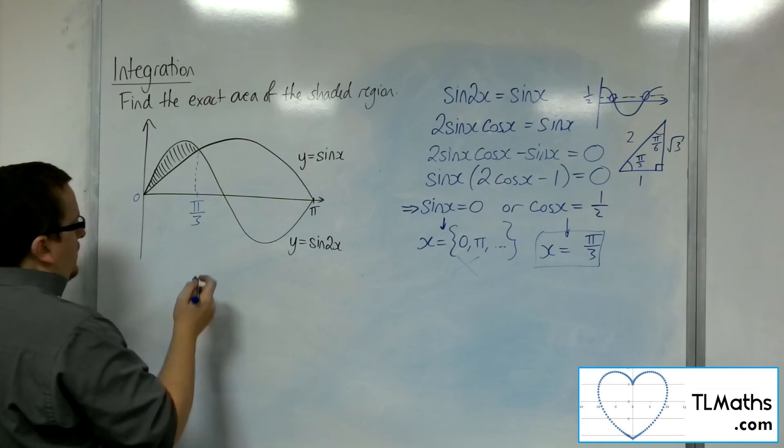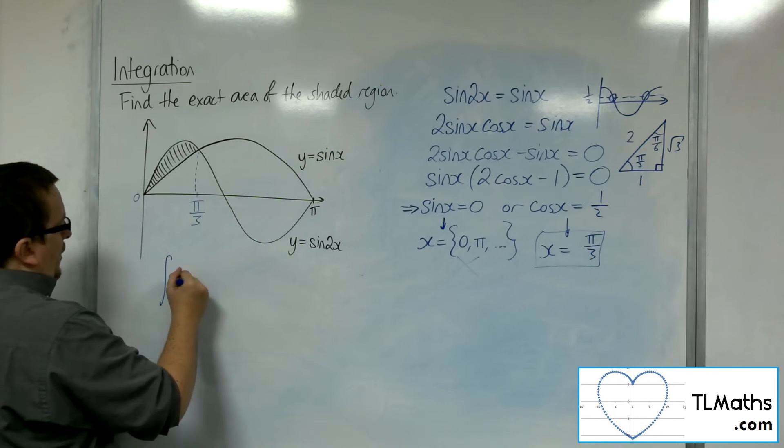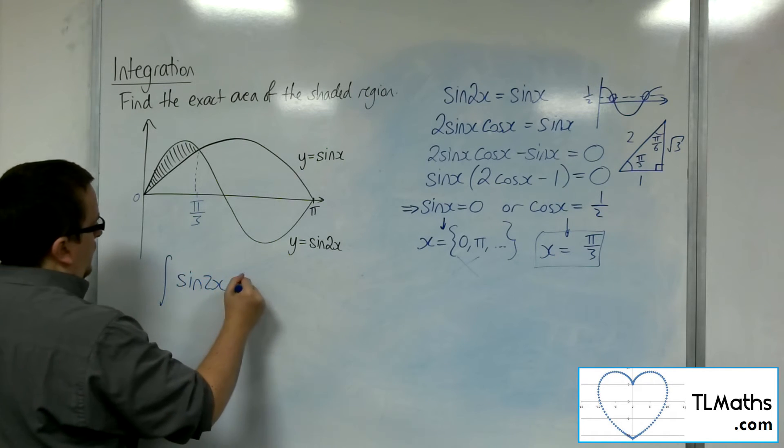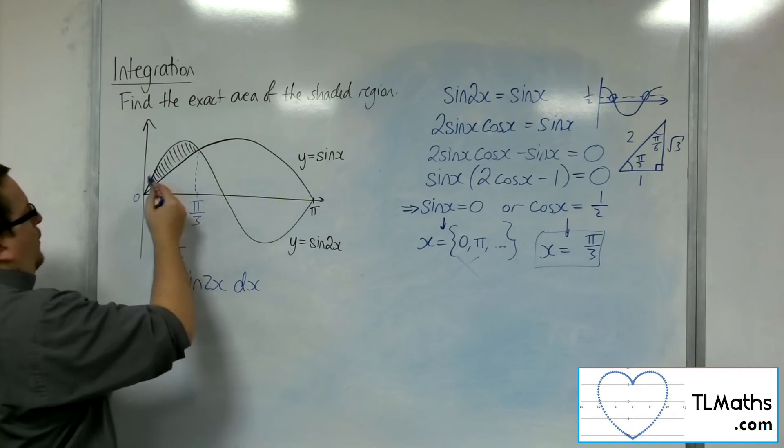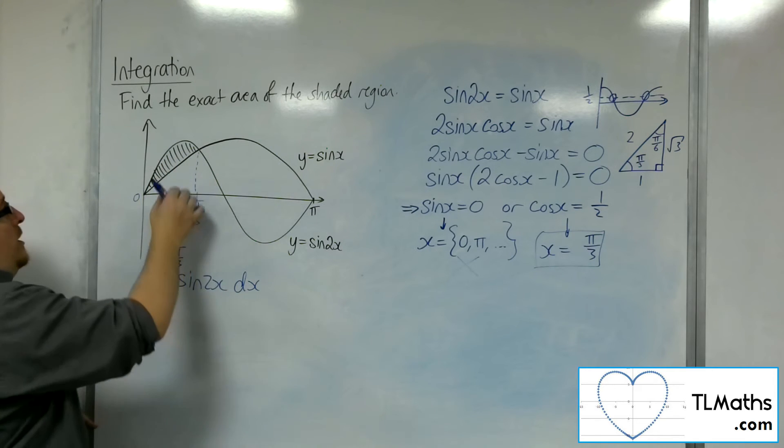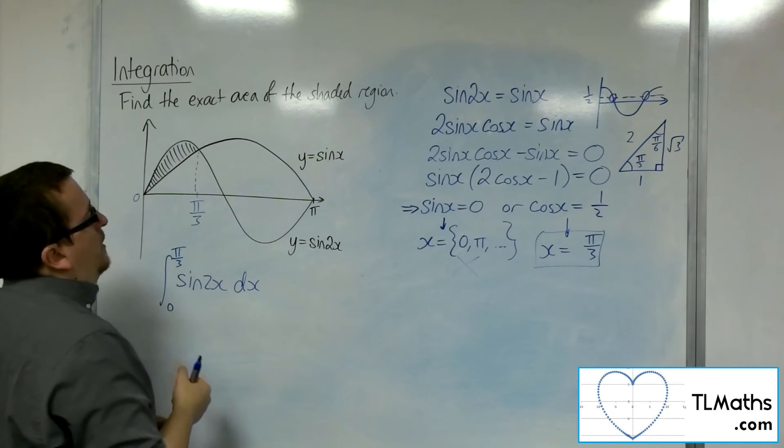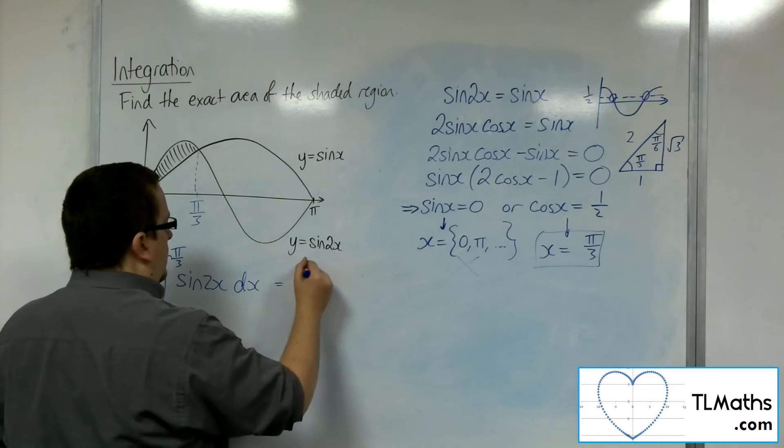So now I can work out this area. Because if I find the integral of sine 2x evaluated between 0 and pi over 3, what that will do is it will give me this total area from which I can subtract the area of sine x between 0 and pi over 3.